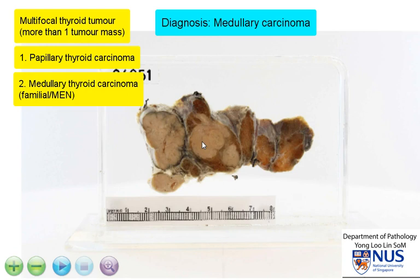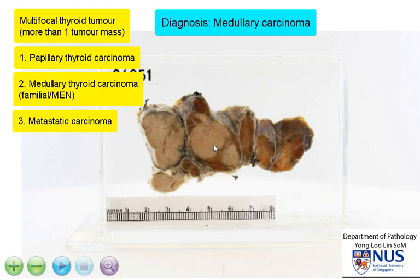The third differential diagnosis is metastatic carcinoma going to the thyroid gland. This is relatively uncommon; however, it can occur. Both papillary thyroid carcinoma and medullary thyroid carcinoma can metastasize to the lymph nodes, and medullary carcinoma can also metastasize to distant sites through the bloodstream.